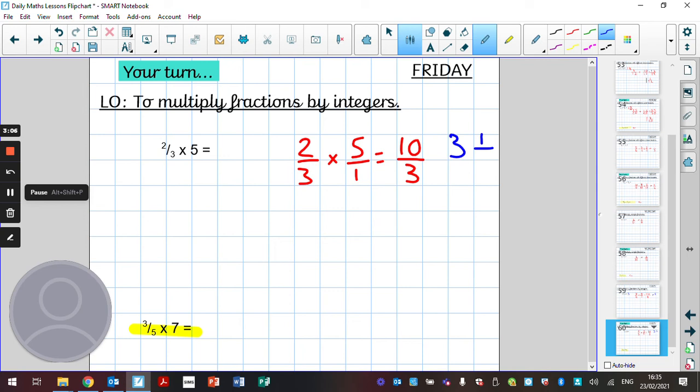What's our denominator? Well it's three isn't it? So our answer to two thirds multiplied by five is three and one third.